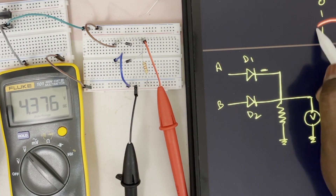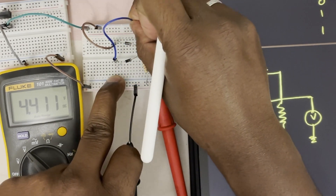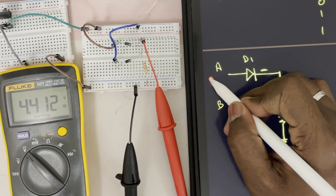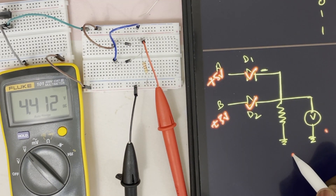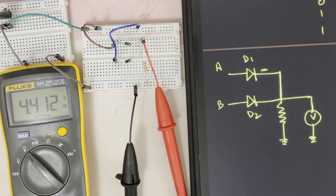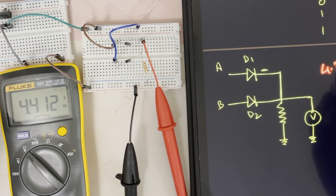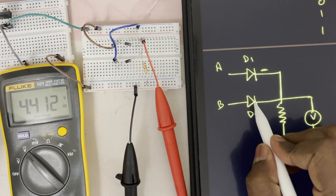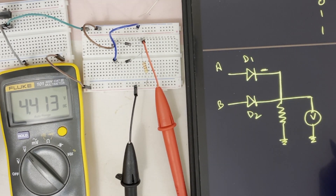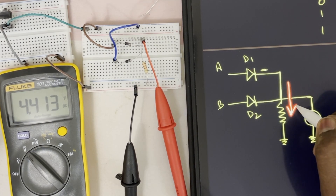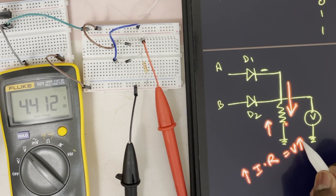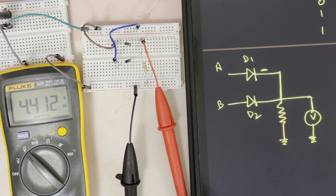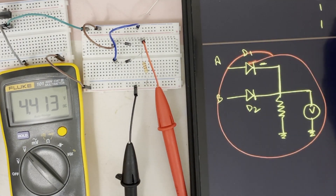Now the last condition is 1, 1. A and B both will be 1. This one is 5 volt and this one is also 5 volt, so D1 and D2 are both conducting. The output is 1 — around 4.4 volt. Why did the output voltage increase from 4.37 to 4.4? Because last time only one diode was conducting, but now both diodes are conducting. When both diodes conduct, the current through the resistance increases. Since V = I × R, if I increases, then V increases. That is why I get 4.4 volt here. This circuit behaves like an OR gate — this is the OR gate using diodes.